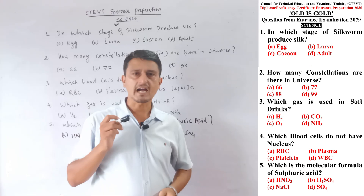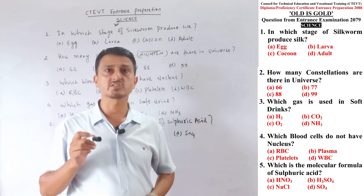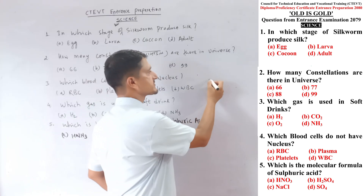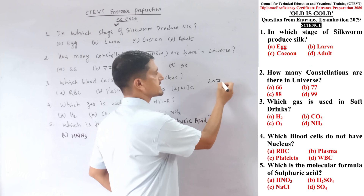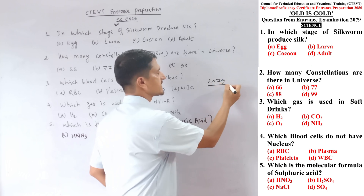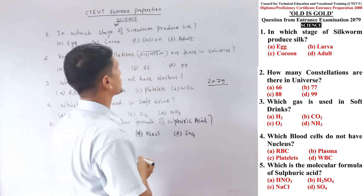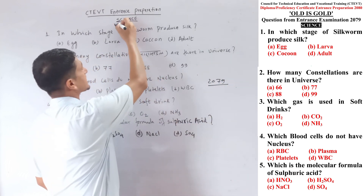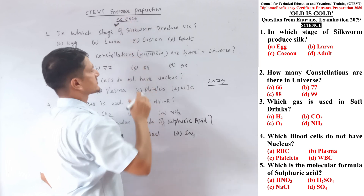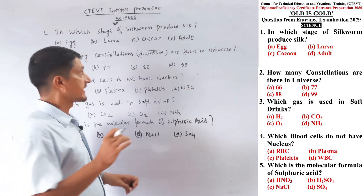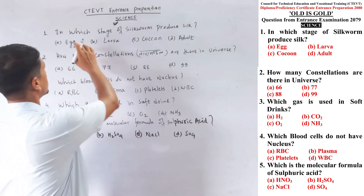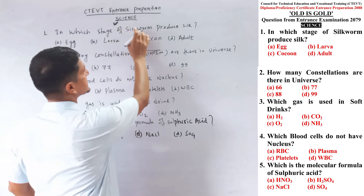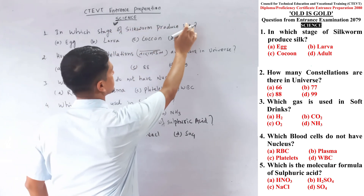Today we have the first shift entrance exam from 1979, with science problems solved. Question number one: in which stage is silk produced?